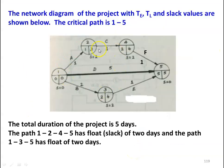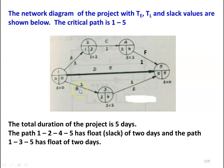This is the network diagram for the project with the TE, TL values and the slack values shown. Activities A, B, and D start from the initial event. Activity C has A as its preceding activity. Activity F has C as its preceding activity. Activity E has B as its preceding activity. The network concludes at the fifth event and the critical path is calculated along with the slack values.